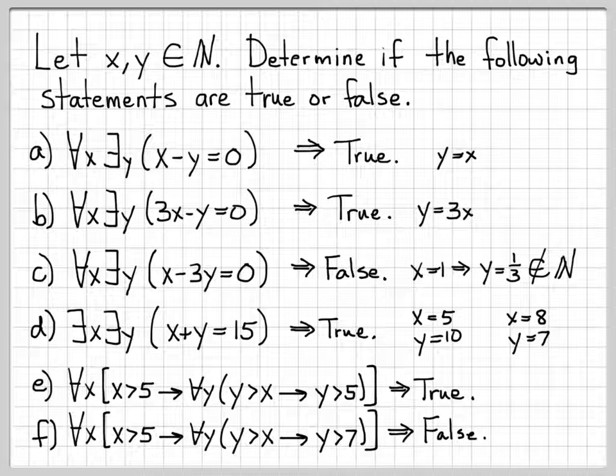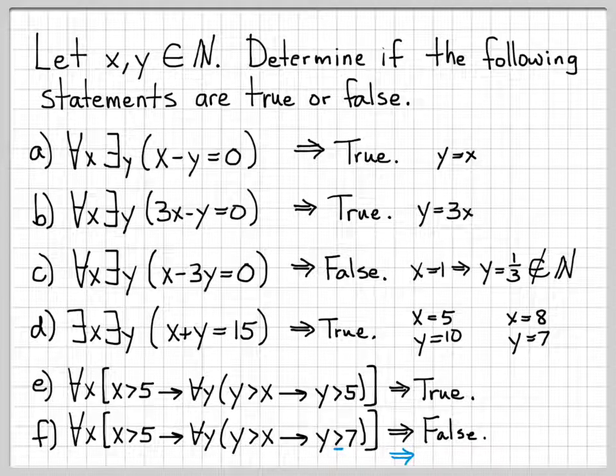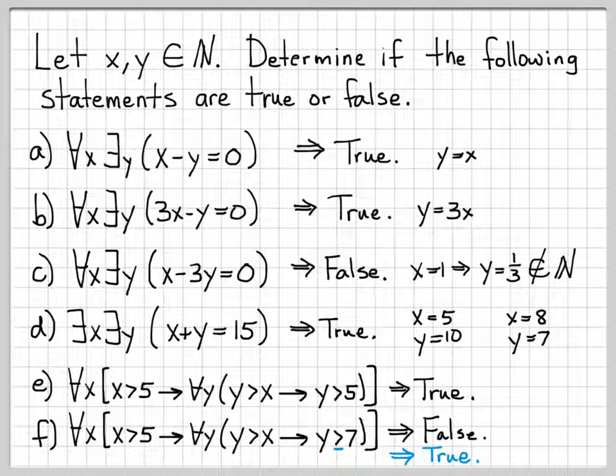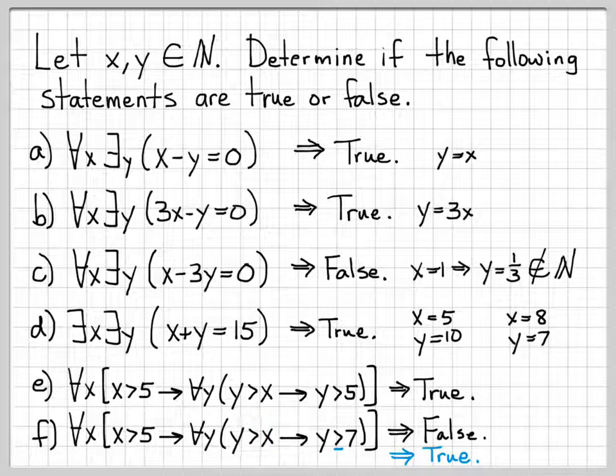If I had changed this problem just oh so slightly and made that a y greater than or equal to 7, then this statement would have transformed into a true statement because we know that y is either 7 or 8 or 9 or 10 or 11 or 12 and y is greater than or equal to 7 in each of those cases. I could have transformed this into a true statement. So this kind of just emphasizes the fact that when working with natural numbers, you kind of need to be careful with inequalities and whether they're strictly greater than or greater than or equal to, that can have a big impact on whether your final statement is true or false.